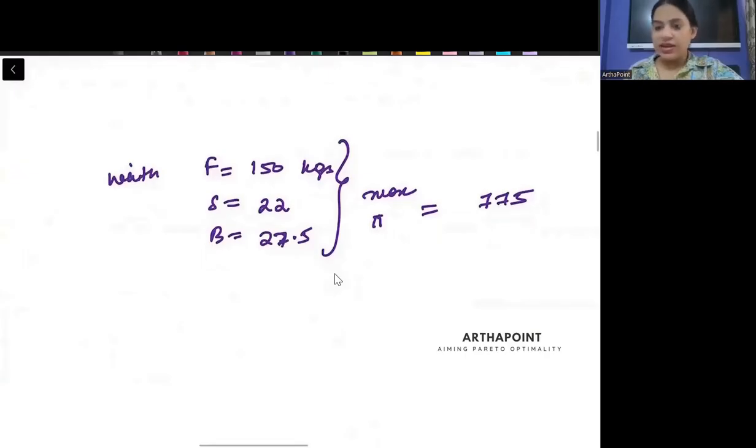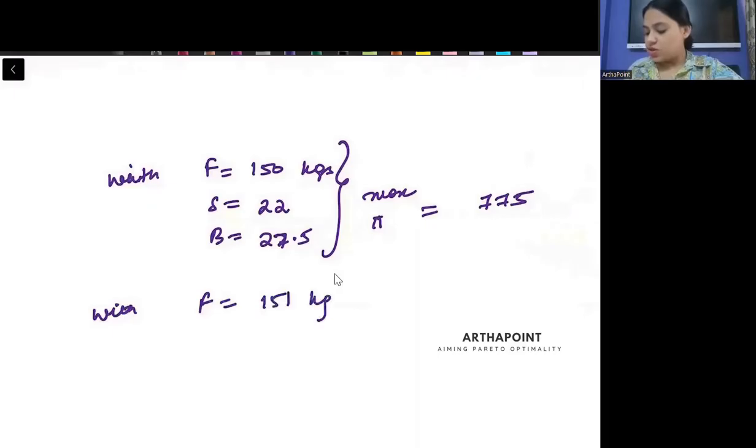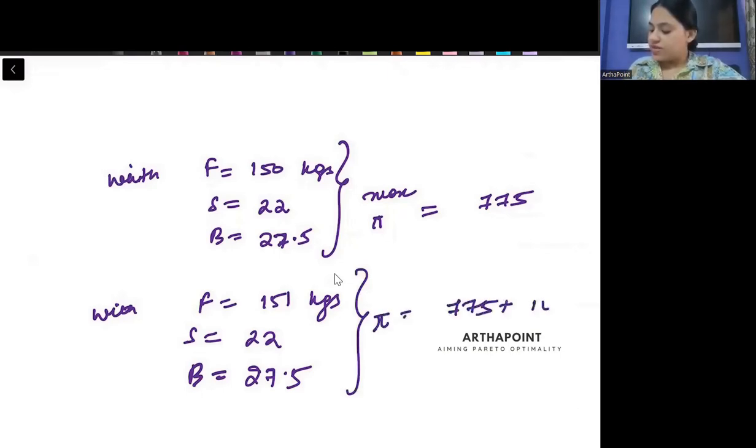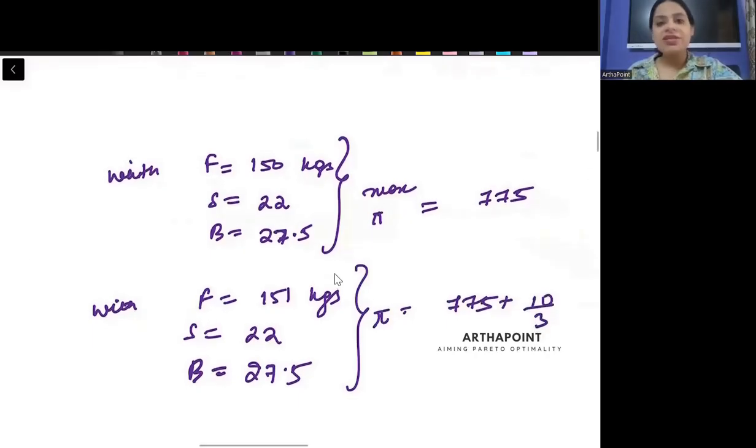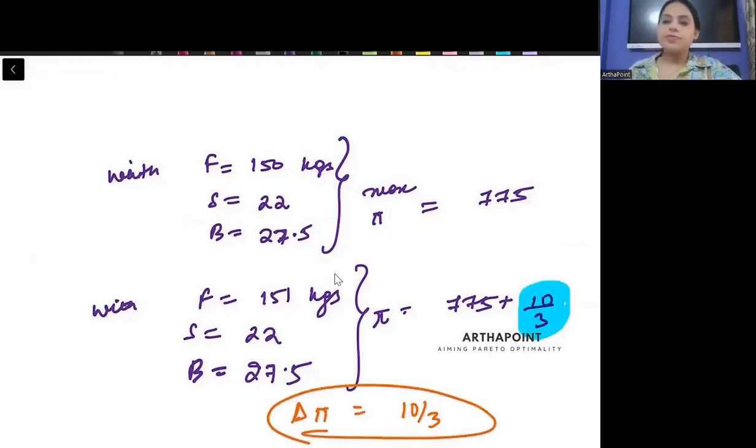Now, beeta, what I did is I increased flour by 1 unit. We have flour ko aeg unit se badaha diya hai. With flour as 151 kgs, sugar as 22 and butter as 27.5, baakhi cheezo ko intact rakhara hai. Nothing else is changing. My new profit is 775 plus 10 by 3. Beeta, profit kitne se bada hai? How much is the increase in the profit that you see? We see that profit increased or the change in profit that I see here is 10 by 3. When did that happen? When I increased the flour by 1 unit.